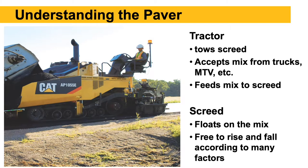Understanding the paver: there are really two major components — the tractor and the screed. The tractor is what tows the screed. The tractor accepts mix from the trucks or from the MTV, the material transfer vehicle, and feeds the mix back to the screed. The screed is what finishes off our mat. The screed is what we call a free-floating screed — it floats on the mix, supported by the asphalt mix underneath it, and is free to rise and fall according to several different factors.